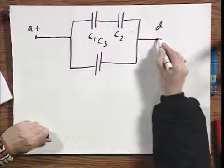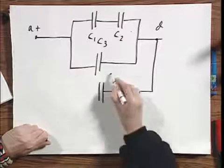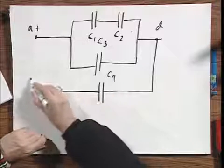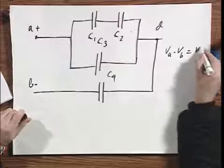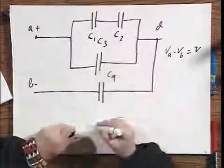This point is called D, C4. Here, and here is B, which is minus, and the potential difference V A minus V B equals V. And now one of the questions is, what is the charge on each of these capacitors?